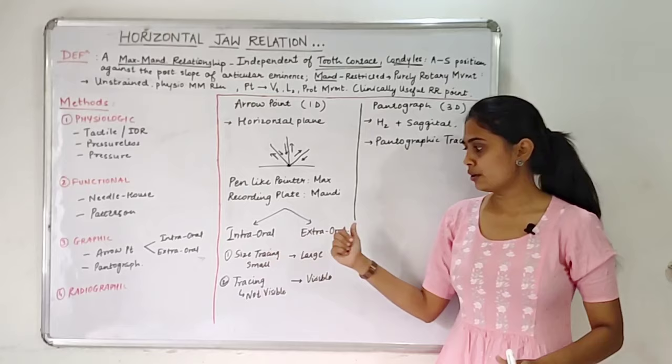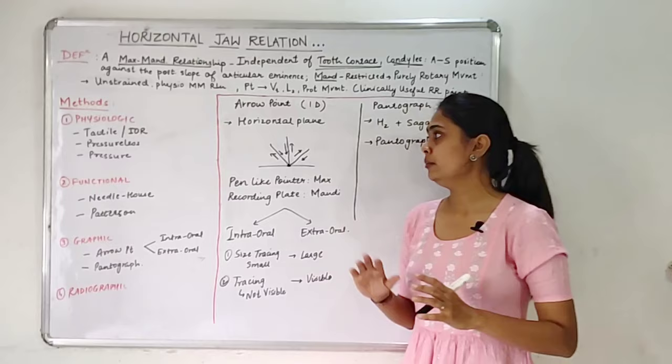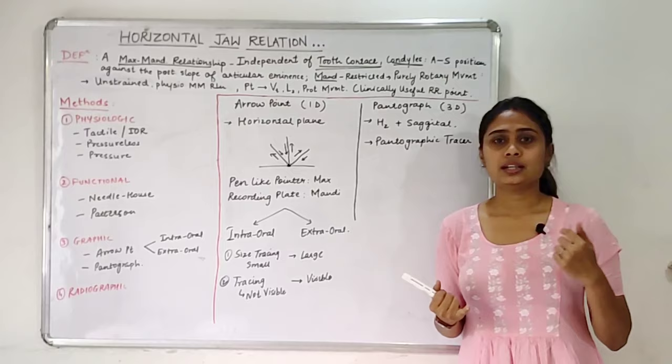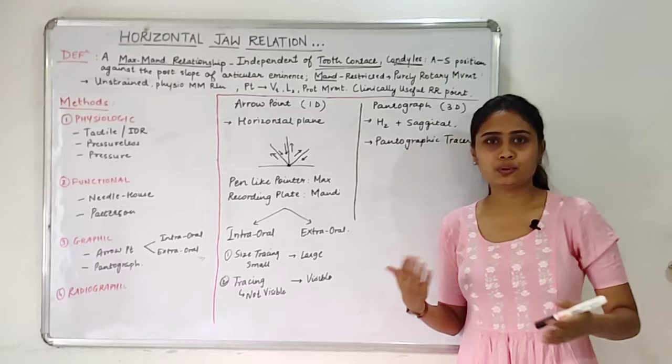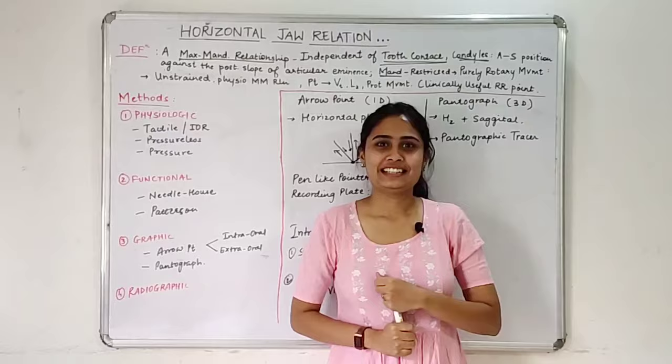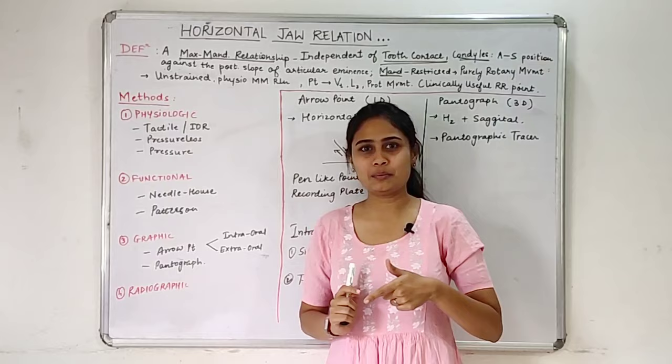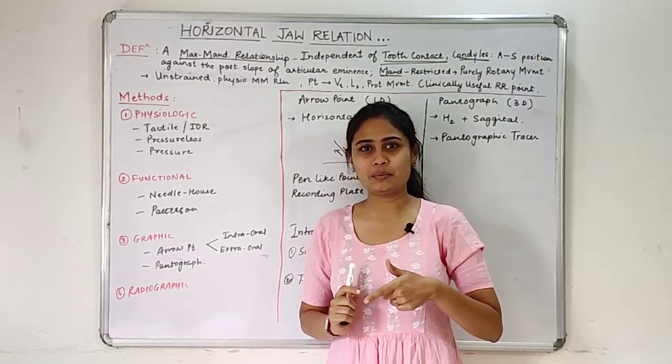That's all about horizontal jaw relation. One more point — there are also other methods to record centric jaw relation using strips of celluloid or softened wax, but we don't need to go into much detail there. That's all for the horizontal jaw relation. Thanks for watching. If you like this video, you can subscribe to my channel, don't forget to hit the like button, and put up some suggestions for the next topic.